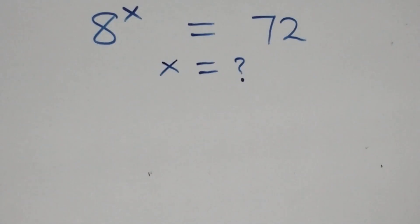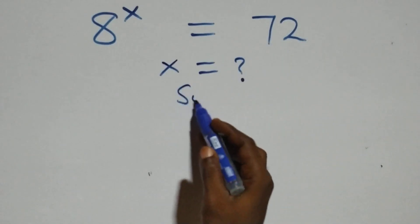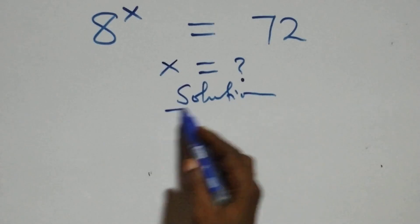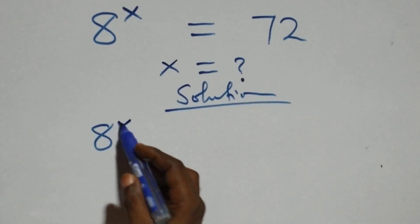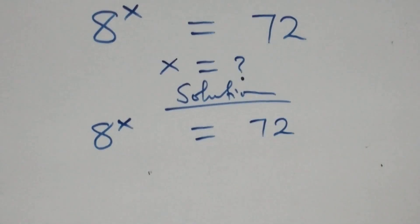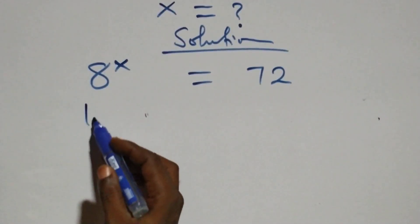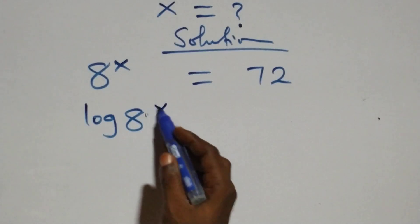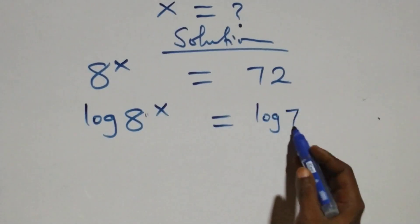Hello, you are welcome. We are going to solve this nice exponential equation. What we have here is 8 raised to the power x equals to seventy-two. We take the log on both sides: log of 8 raised to the power x equals to log seventy-two.